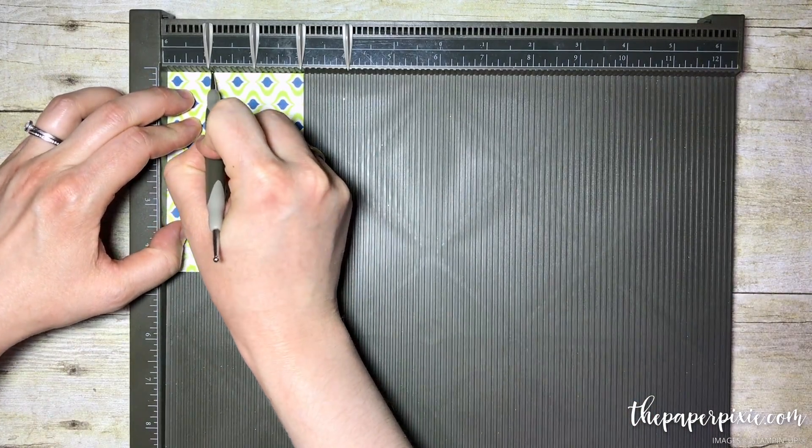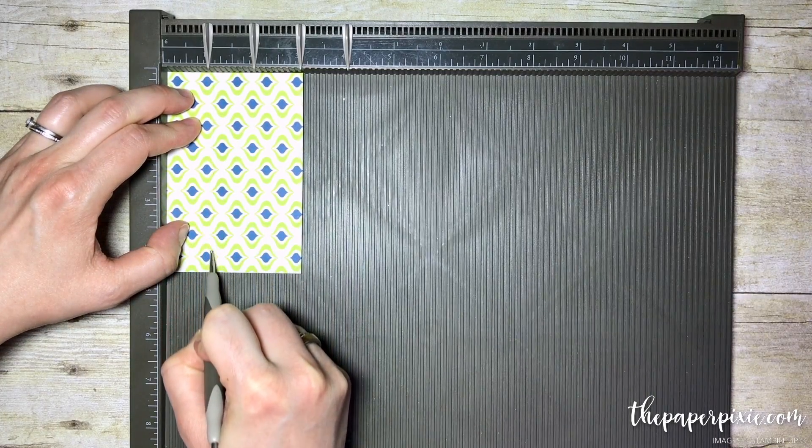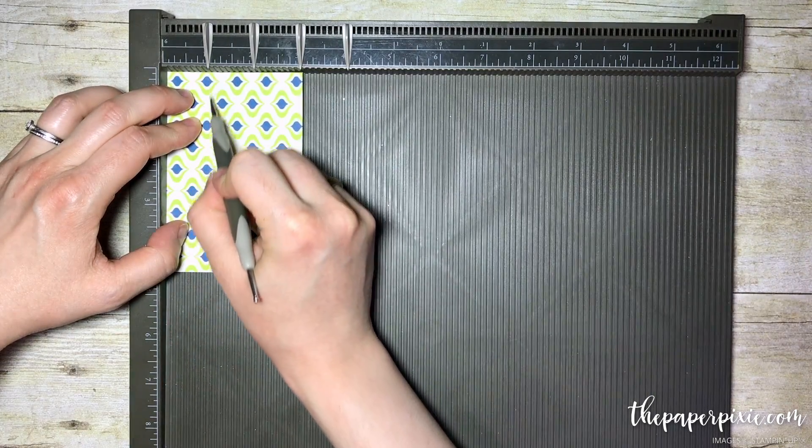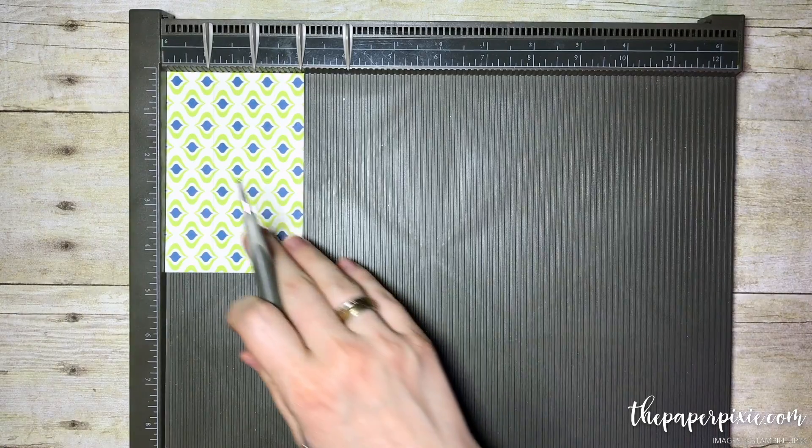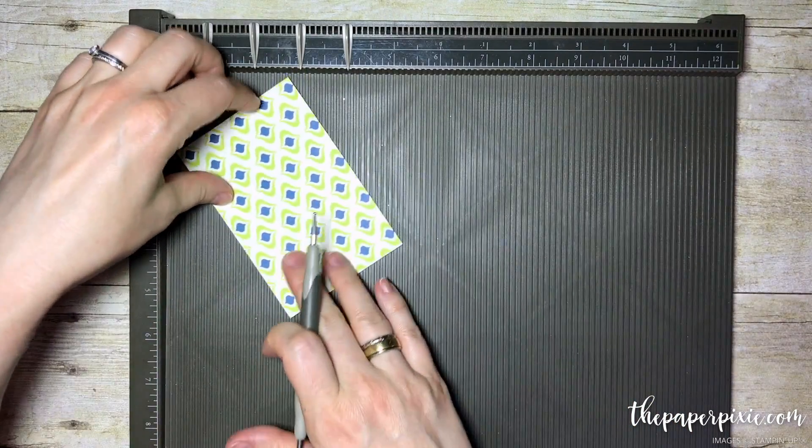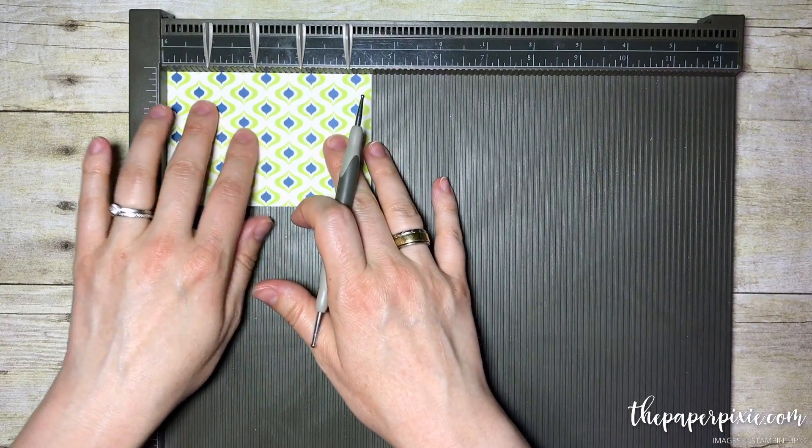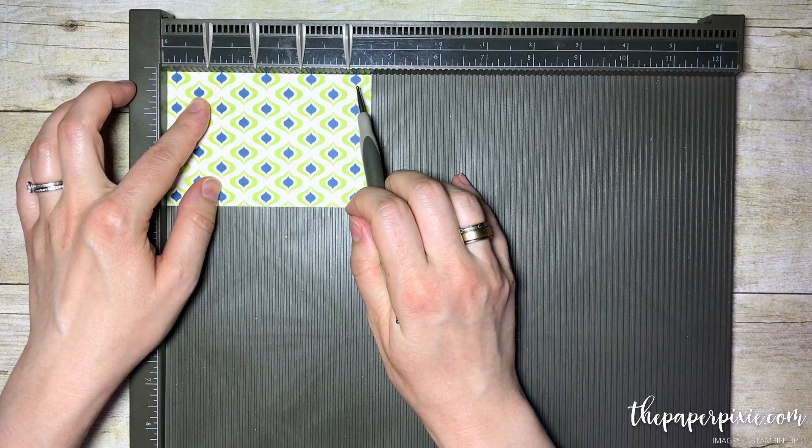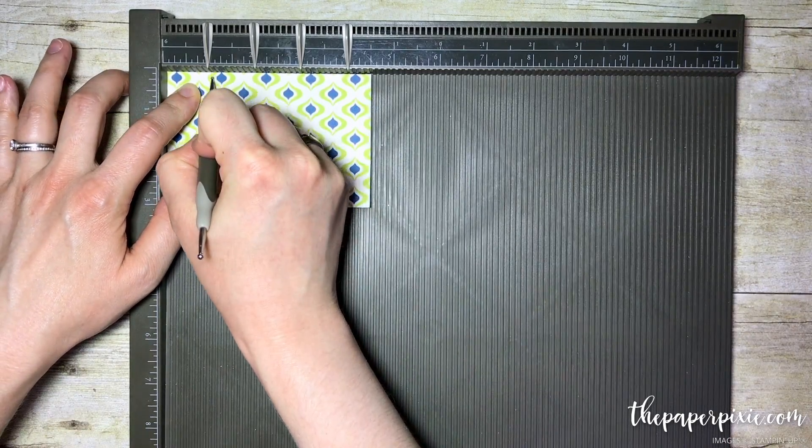On the short side, the 3 inch side, we are going to score at the 1 inch mark. With designer series paper you don't want to push down too hard when you make the score line. Then we're going to turn it sideways onto the 4.5 inch side.